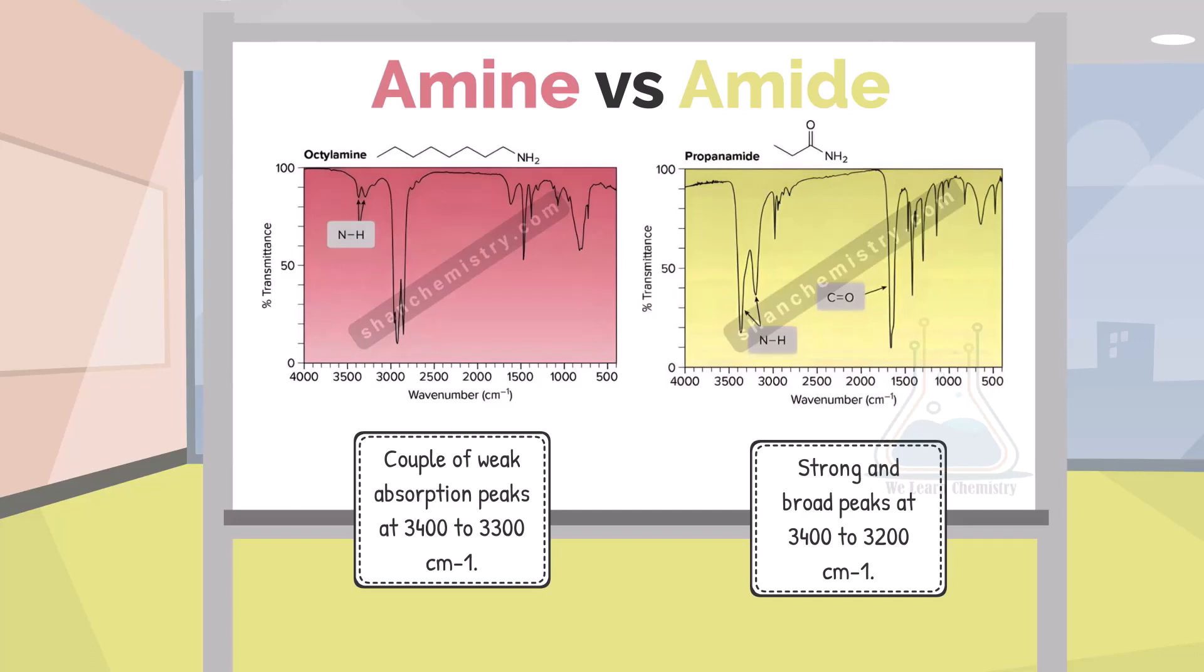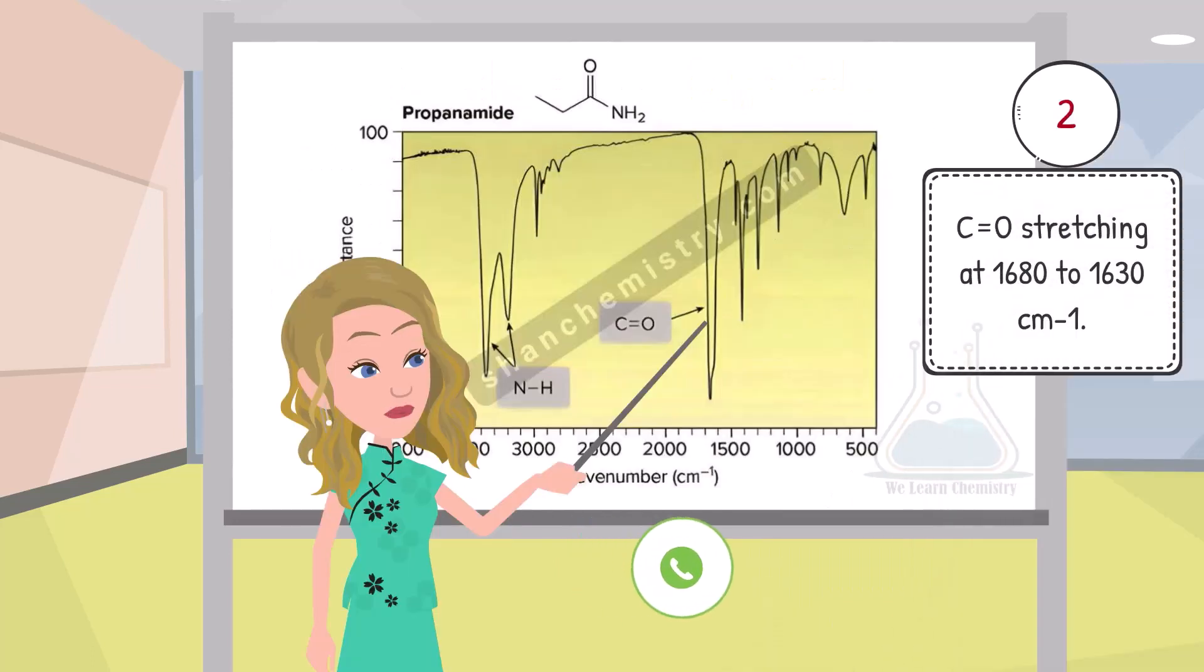Amines show a couple of weak absorptions at 3400 to 3300 per cm. We can observe a peak at 1680 to 1630 due to the carbonyl bond.